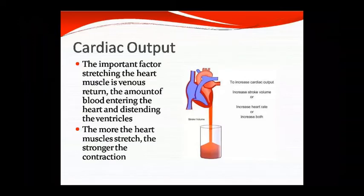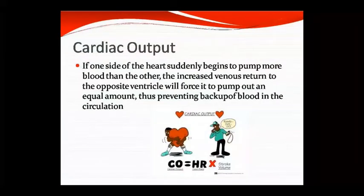This diagram shows how stroke volume is determined. Cardiac output will increase as stroke volume increases and heart rate increases. If one side of the heart suddenly pumps more blood, the venous return into the opposite ventricle will force it to pump out an equal amount, thus preventing backup of flow. This maintains equal circulation, and this balance is the basis of cardiac output — CO equals HR times stroke volume.